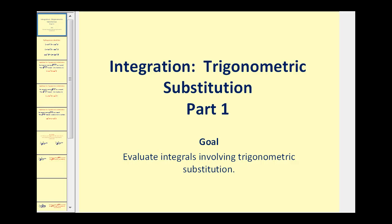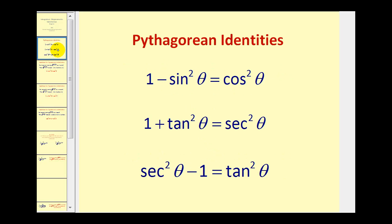Welcome to the first of several videos on the integration technique of trig substitution. All the techniques discussed in this video are based upon these Pythagorean identities: one minus sine squared theta equals cosine squared theta; one plus tangent squared theta equals secant squared theta, which can also be expressed as secant squared theta minus one equals tangent squared theta.